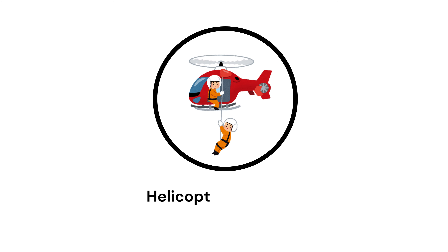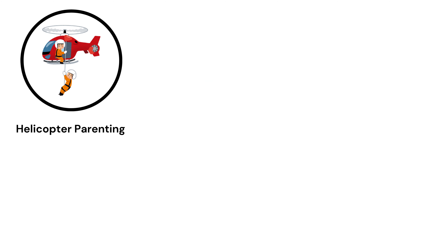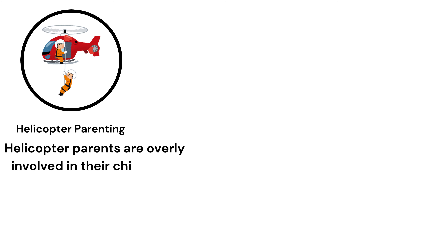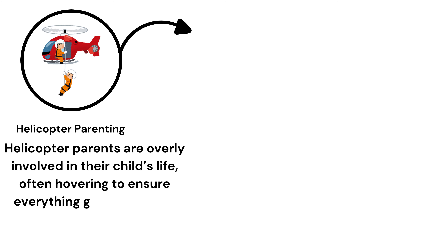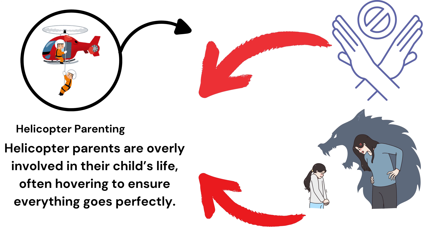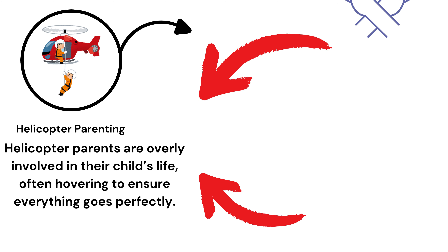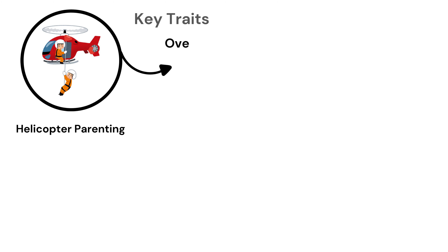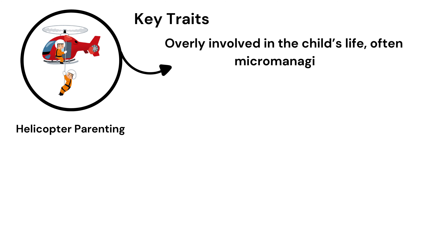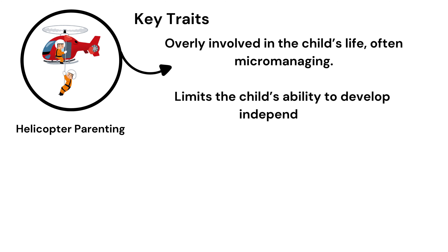Helicopter Parenting. Helicopter parents are overly involved in their child's life, often hovering to ensure everything goes perfectly. This can sometimes limit a child's independence. Key Traits: Overly involved in the child's life, often micromanaging.